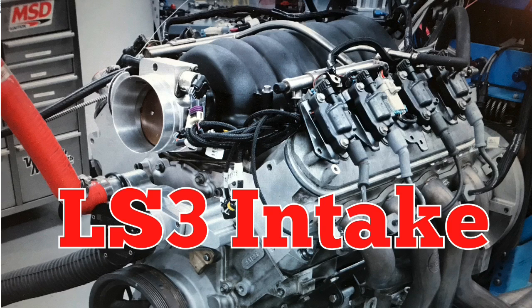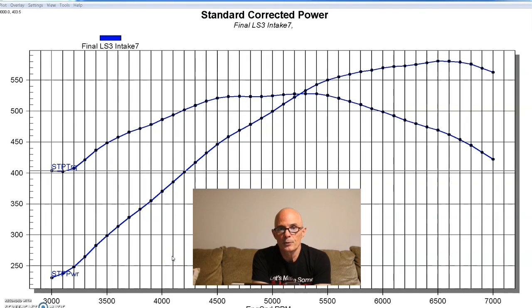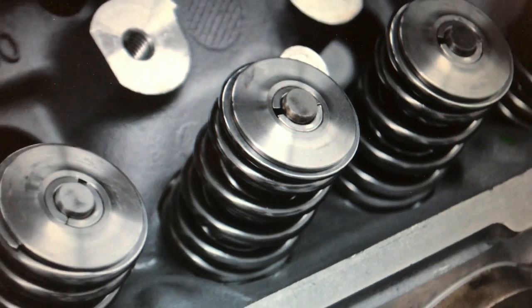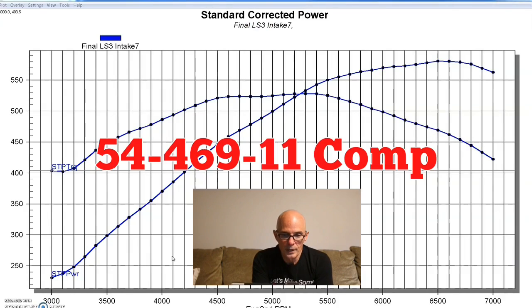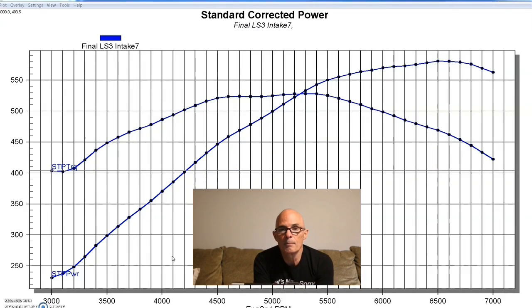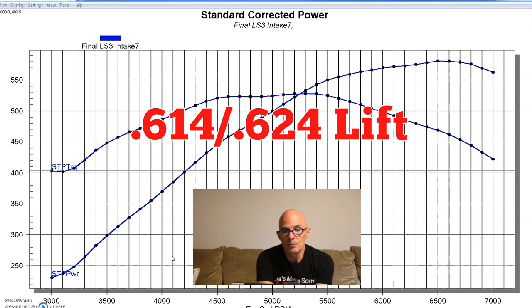Here's how we got things started. We installed our GM LS3 crate motor from the guys over at Gander Chevrolet up on the dyno. The only modifications we made to this are we put valve springs in it so we can run our camshaft. The camshaft that we ran in this crate motor was a 54-469-11 comp cam. I'll go ahead and put the specs up here.